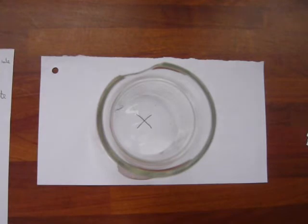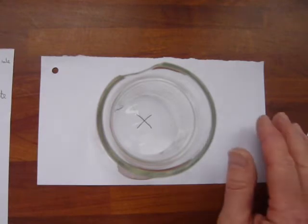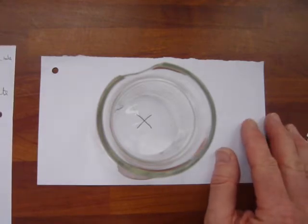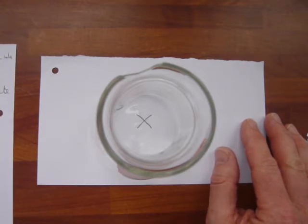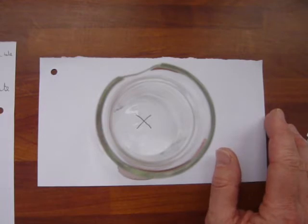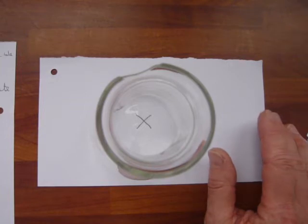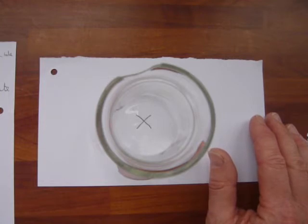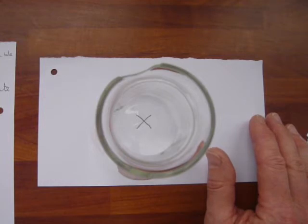This experiment has lots of what we call control variables. The control variables are the variables you have to keep the same to make it a fair test. Obvious things to keep the same: you have to keep the volume and the concentration of the acid the same, and the volume and the concentration of sodium thiosulfate the same. You're changing temperature. The two things that are most likely to affect the reaction are the concentration of the two chemicals.